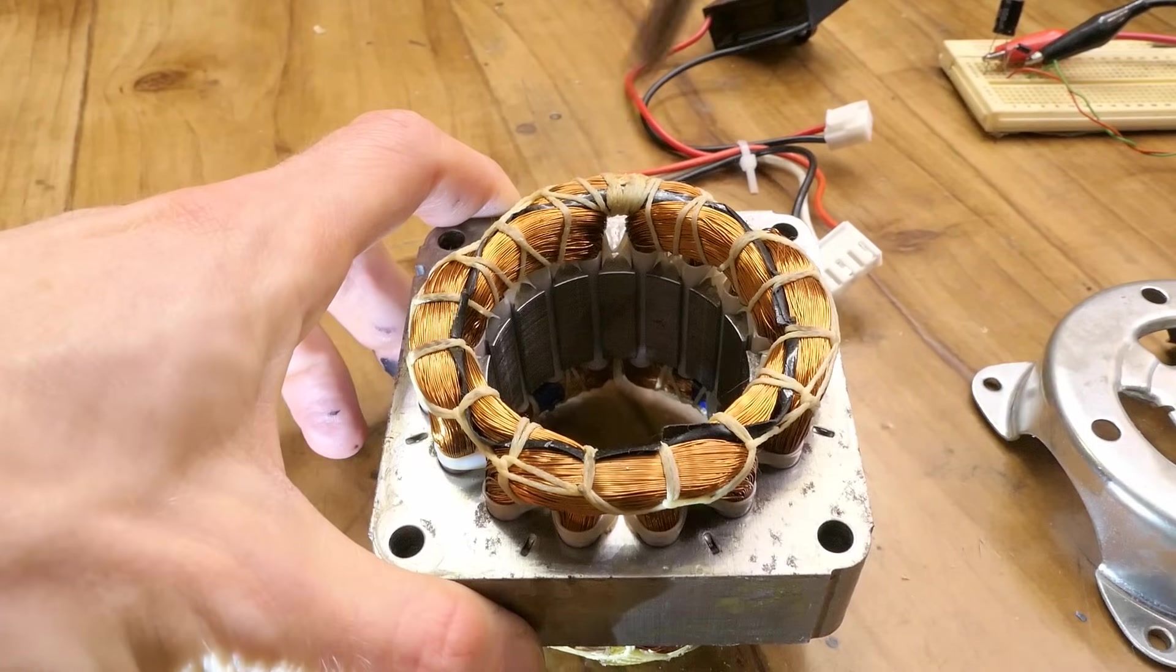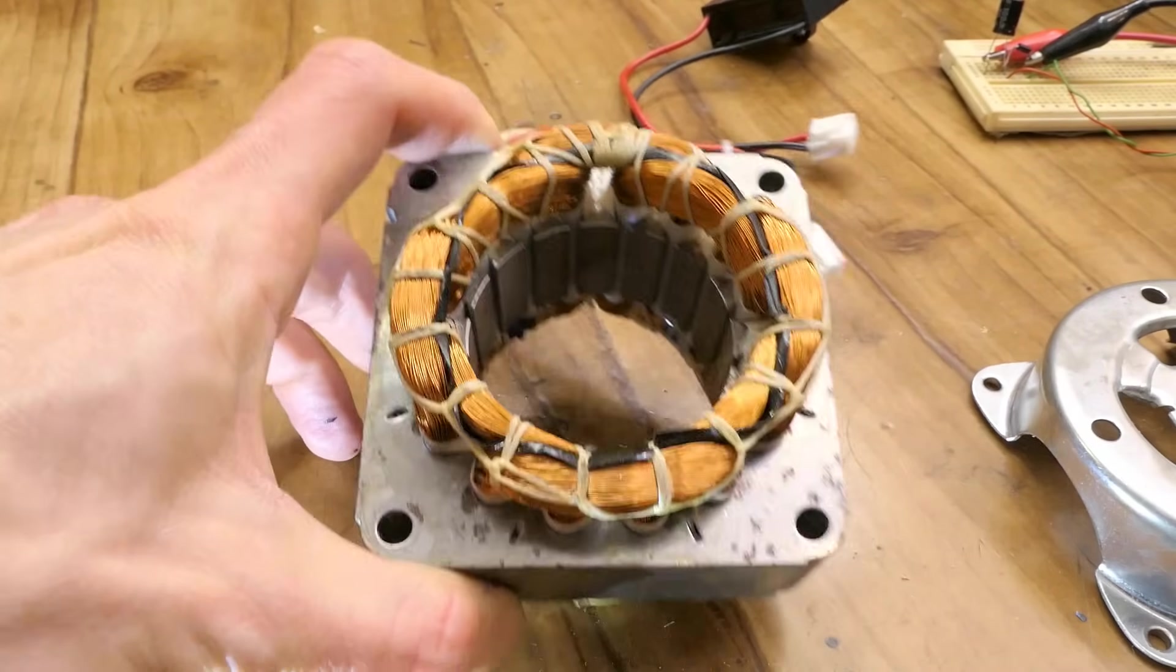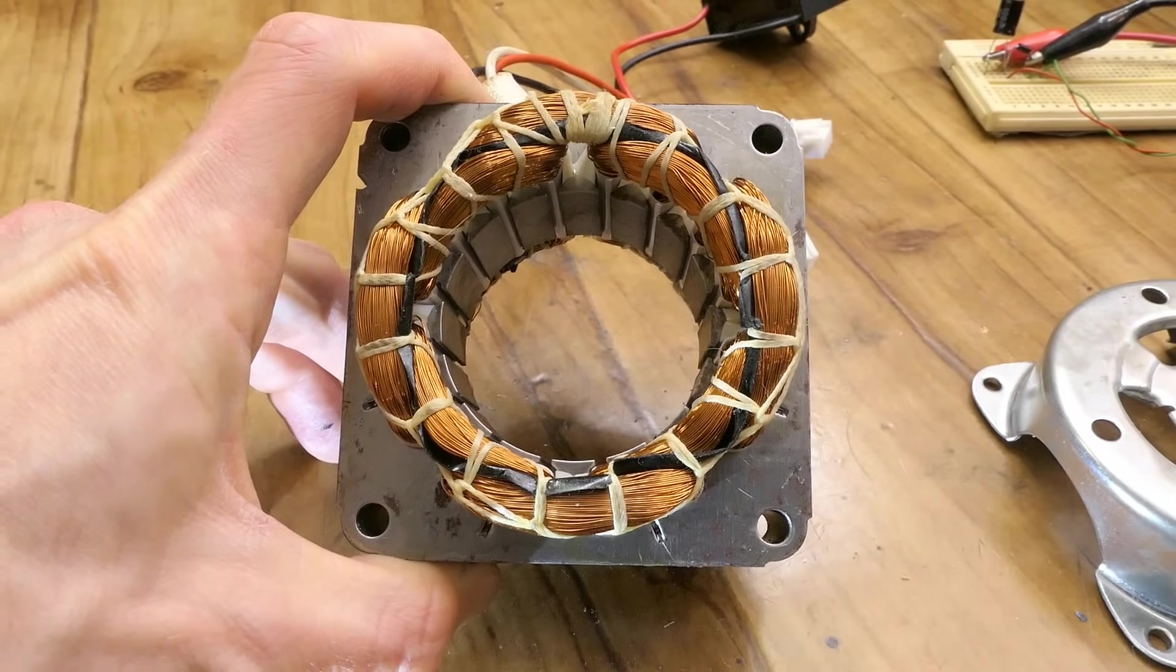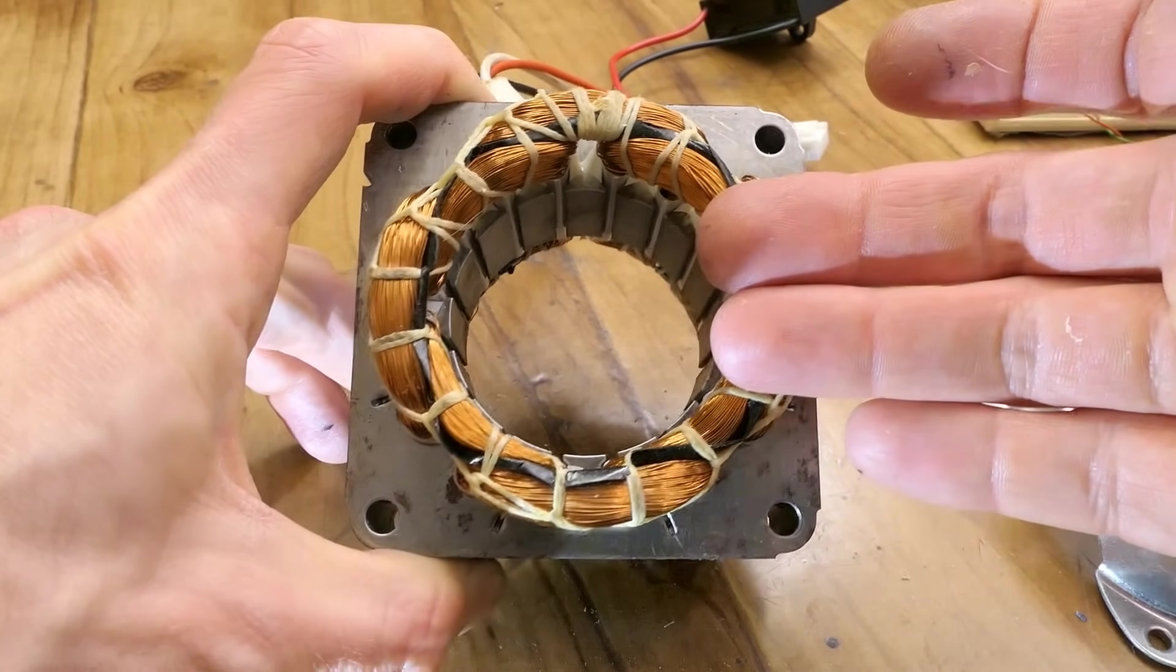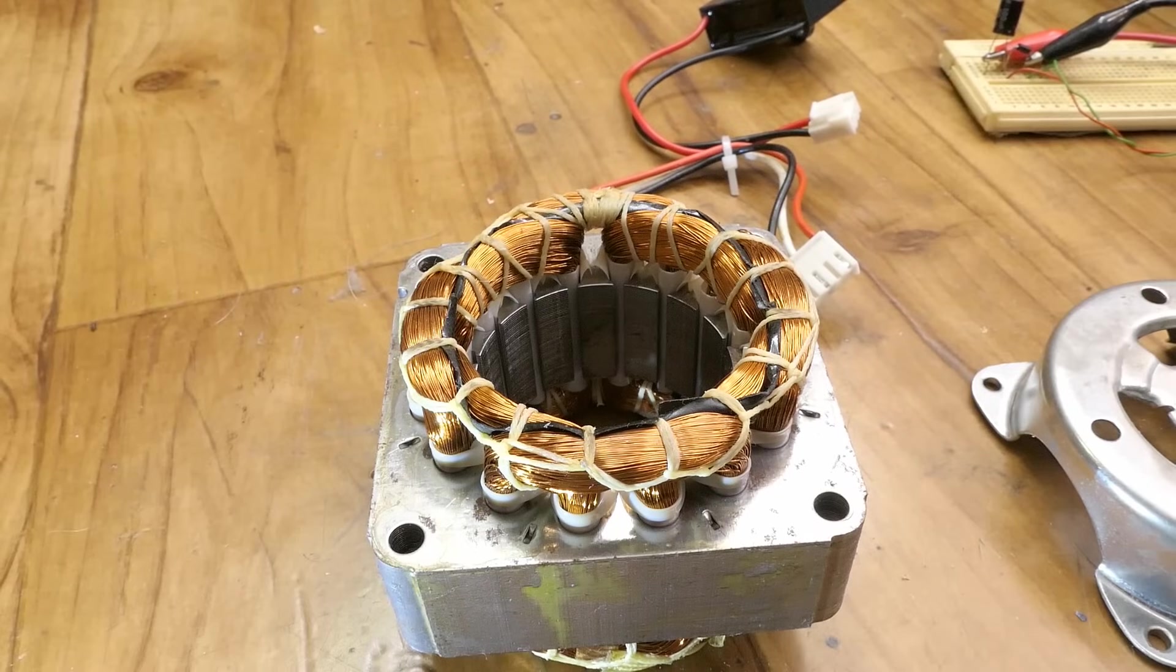So the rotor in an asynchronous motor is turning a little bit slower than the magnetic field. So in this one it should be a little bit less than 25 revolutions per second or a little bit less than 1500 revolutions per minute.